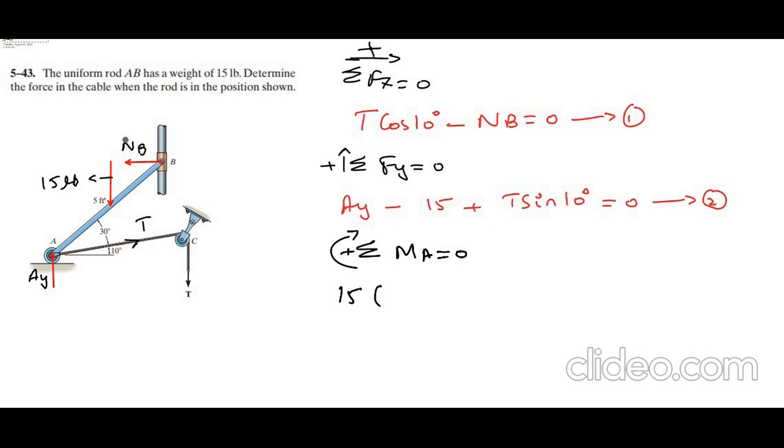Now for the moment arm, the moment arm is this horizontal distance. To find this horizontal distance, we need to consider this length. Now this length is 2.5 feet because the rod is uniform, so its center of gravity will lie half of the length. So we have total length 5 feet, and the rod is uniform, so our center of gravity is at 2.5 feet. So we have 2.5 cos 30 plus 10 degrees, 40 degrees. This is the moment arm for 15 pound force.